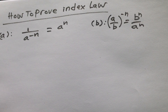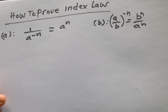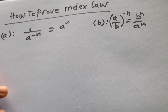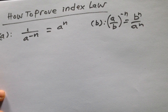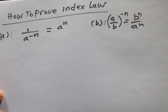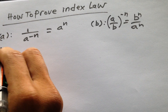Now we go to study how to prove index laws. We have: a) 1 divided by a to the power minus n equals a to the power n, and b) a divided by b to the power minus n equals b to the power n divided by a to the power n. So how can we define and prove it?